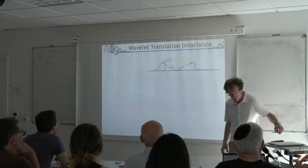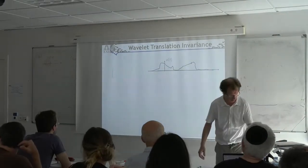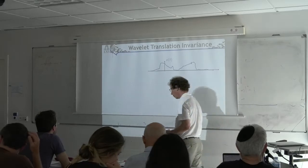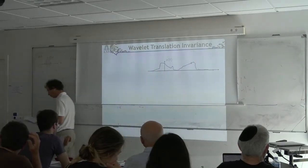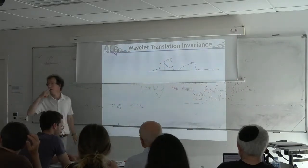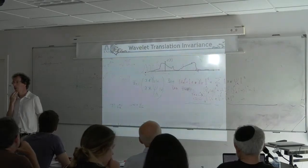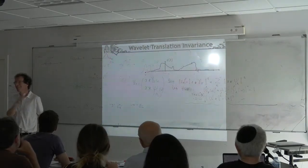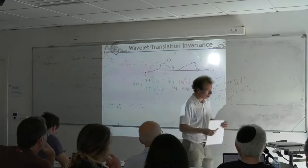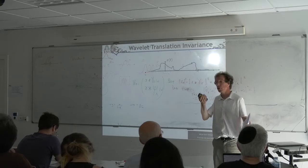Now I want to address the relation with deep nets. I'm going to look at how you build invariants with these kinds of structures and how you linearize translation and diffeomorphisms. The wavelet structure is well-suited to be stable to diffeomorphisms because it has uniform width on the log-frequency axis. It's entirely linear, which a deep net is not.